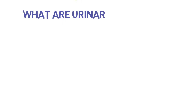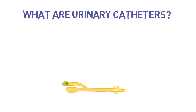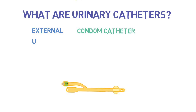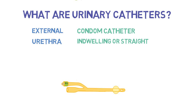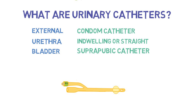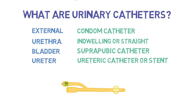What are urinary catheters? In its simplest form, a urinary catheter is a hollow tube placed somewhere into the urinary tract that allows for the drainage of urine. An external catheter can be placed around the penis — usually referred to as a condom catheter. Drainage can happen from the urethra, either by an indwelling or straight catheter. If placed directly into the bladder, this is referred to as a suprapubic catheter. A catheter can also be inserted into a ureter, though this is rarely seen outside the operating room. Commonly, you might see a ureteric stent.